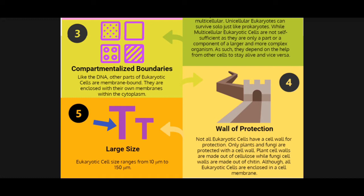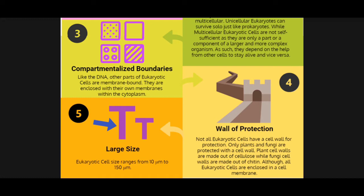Number three: compartmentalized boundaries. Like the DNA, other parts of eukaryotic cells are membrane-bound, which is opposite to prokaryotic cells. Each part, or most parts, of eukaryotic cells is bound within its own membrane — they are compartmentalized and separated by boundaries, so they don't share the same space with other parts.